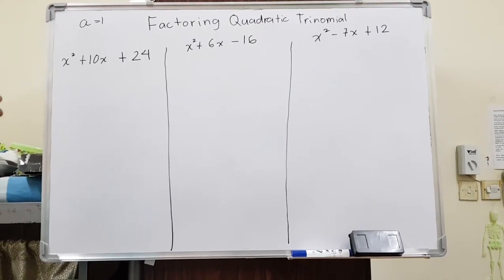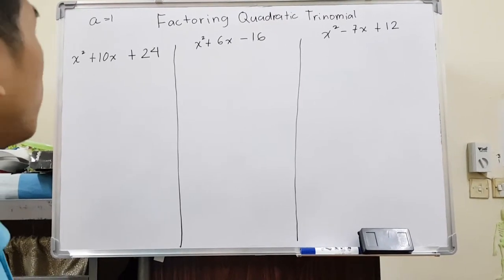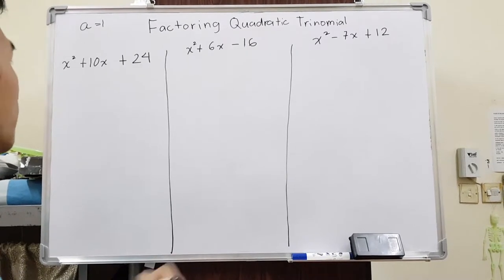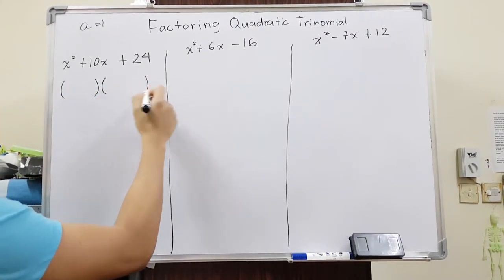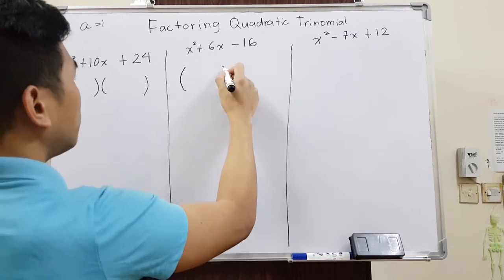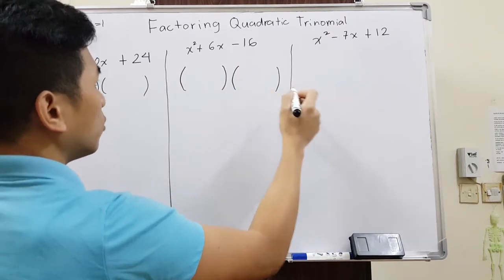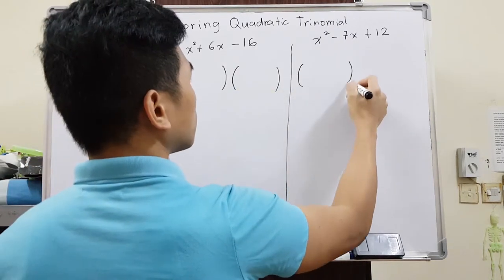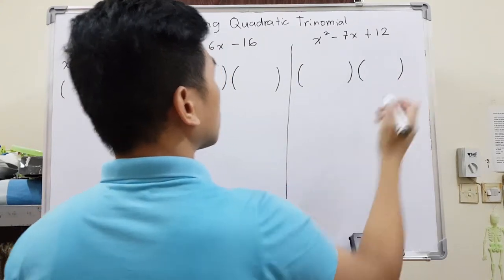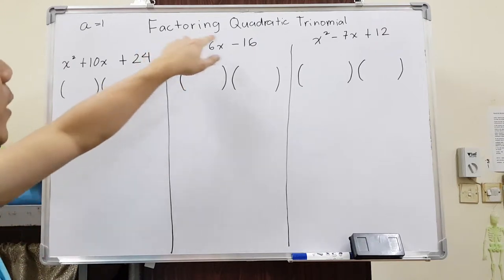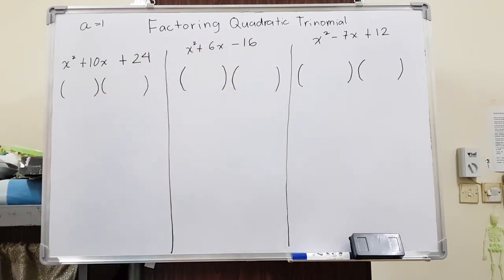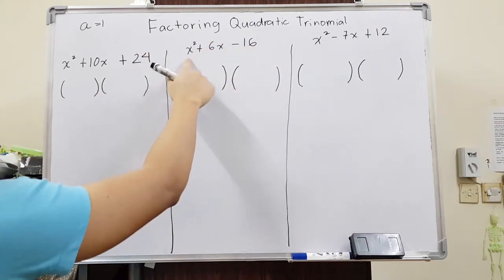We are going to discuss factoring quadratic trinomials. When you say factoring, we're going to solve it using two brackets. We are going to factorize them by placing them into two brackets. This method is only applicable if you have a trinomial.